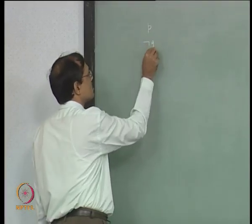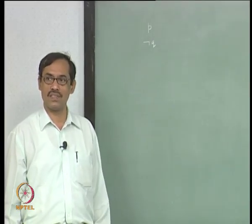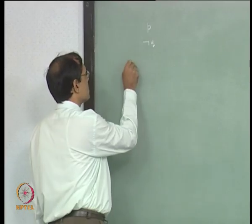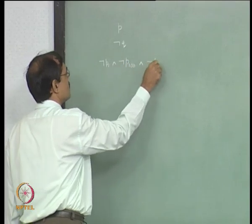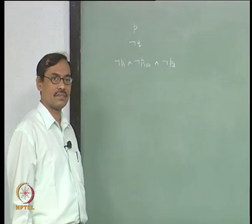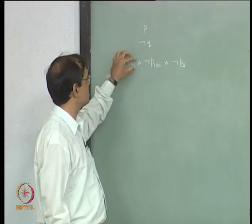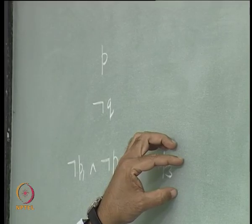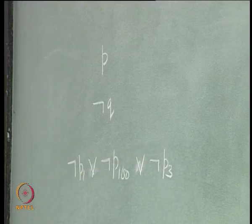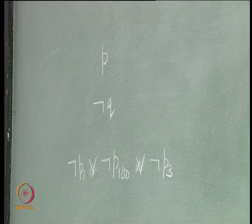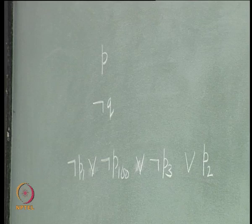If you take not Q, that is also a HORN clause — that is at most one unnegated. If you take something like not P1 or not P100 or not P3, that is also a HORN clause. If you take the OR of them, that is also a HORN clause. There is nothing unnegated there — everything is negated. But you can add at most one unnegated variable and it is still a HORN clause.